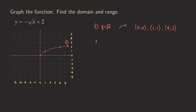Now we start. We ignore the plus 2 for now and multiply the whole function by negative one — so we have y equals negative square root of x. When we do this vertical reflection, we reflect the entire graph about the x-axis. Because it's a vertical reflection, only the y-values will change.